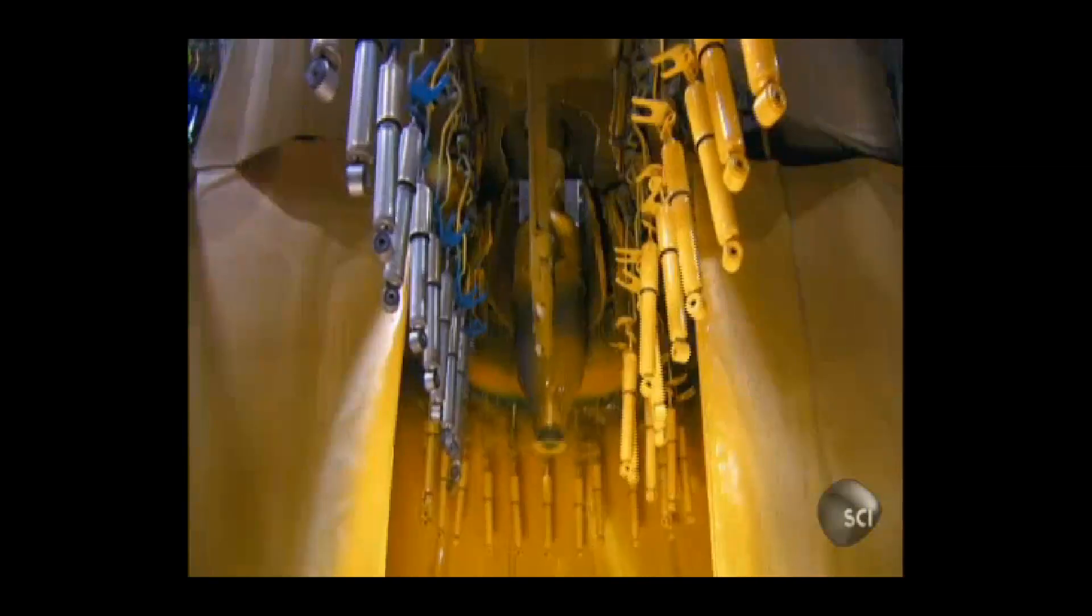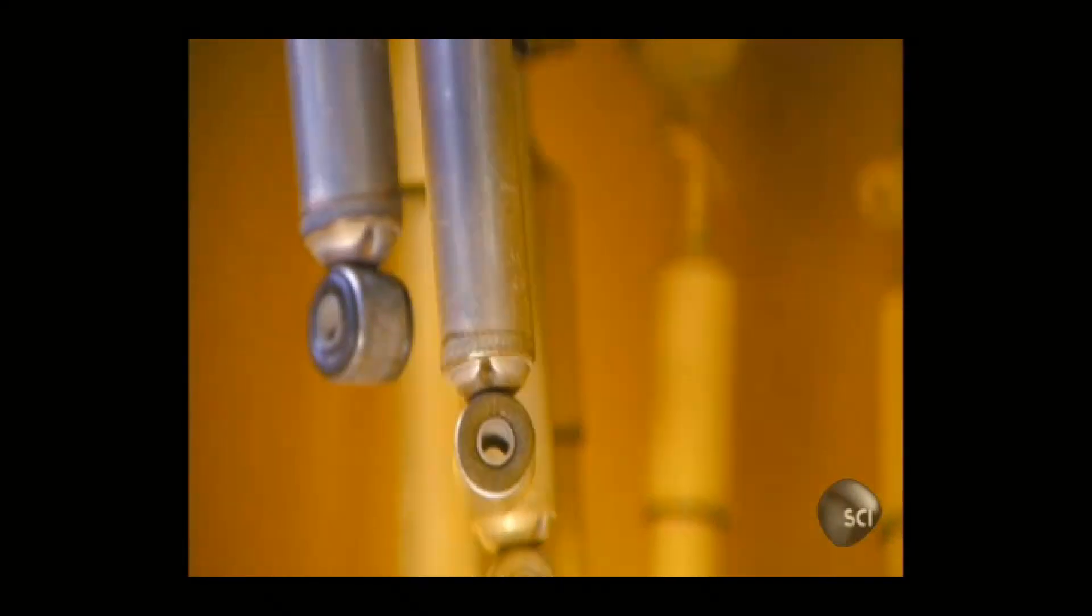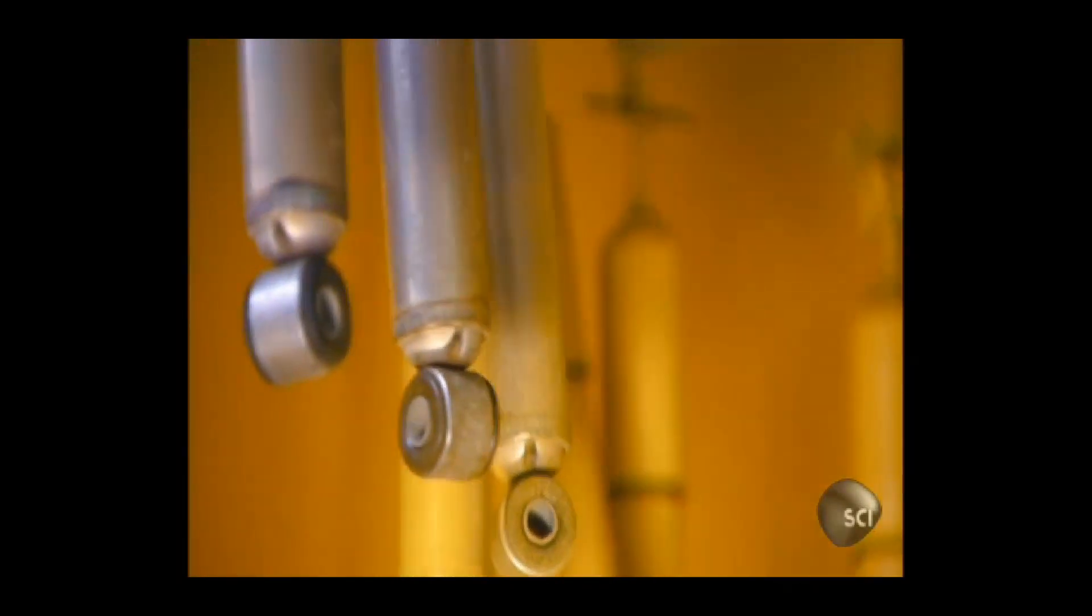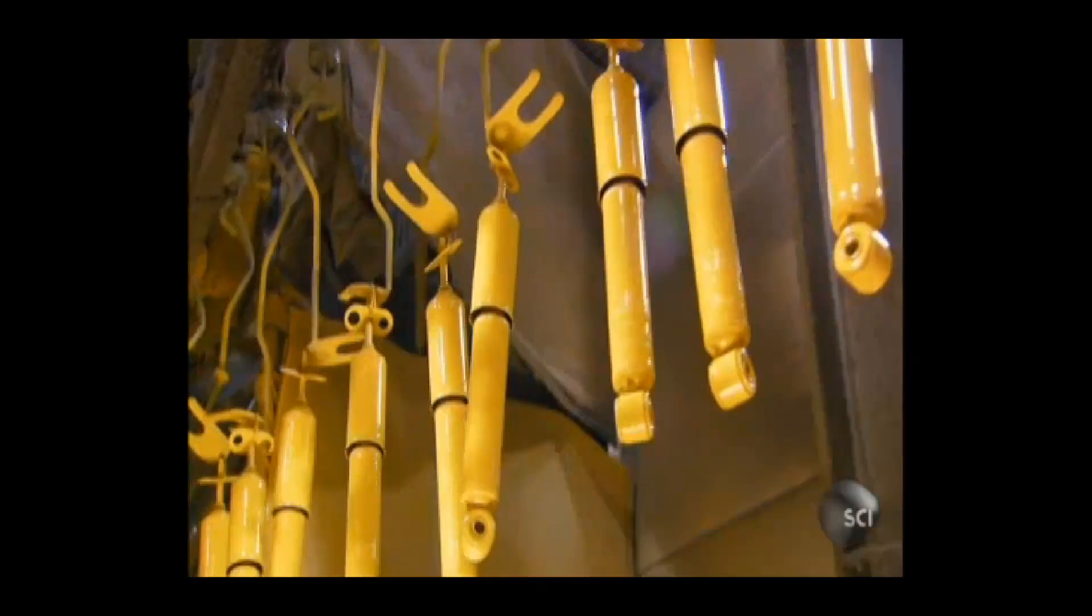A machine runs a positive electrical current through the shocks and a negative one through the paint particles. Like a magnet, the static electricity draws the paint onto the shocks in a flawless coat.